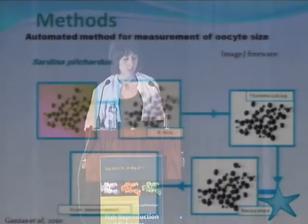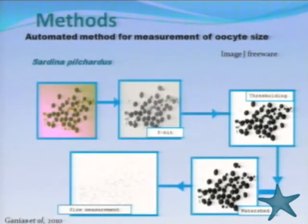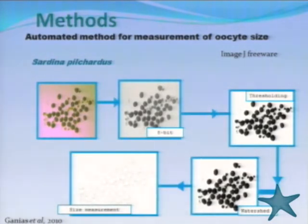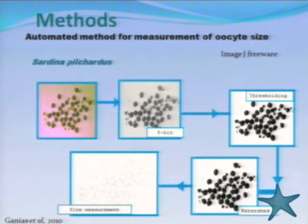In detail, for the species Sardina pilchardus, we used an automated method consisting of four steps: first, converting the image to an 8-bit black-and-white image; then applying thresholding and watershed commands to separate the oocytes; and finally obtaining the size measurements.